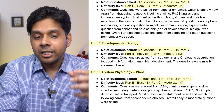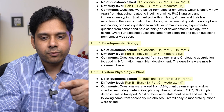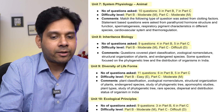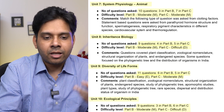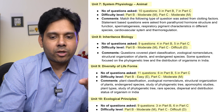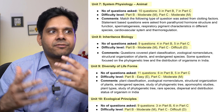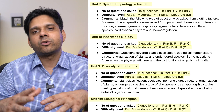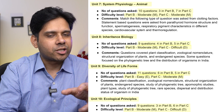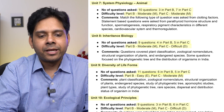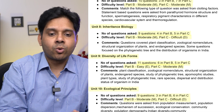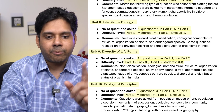Systems Physiology — Plant is good news for botany students. Unit 7, Systems Physiology — Animal, had 10 questions, making it a scoring unit too. So whether you are a botany or zoology student, you are not at a loss — both units had double-digit questions of 10 and 12 respectively.